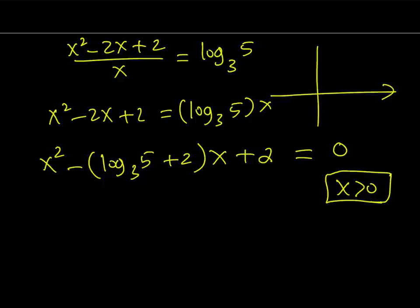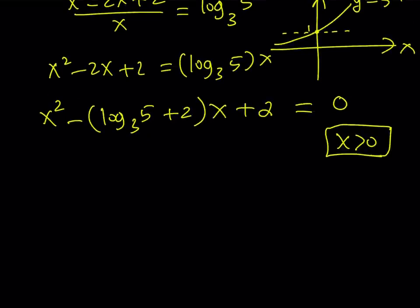You can also look at it this way. If you consider the graph of 5 to the power x, it's going to look like this. It's going to have a y-intercept here at 0, 1. And notice that the y values are greater than 1 if x is positive. That's why x has to be greater than 0.